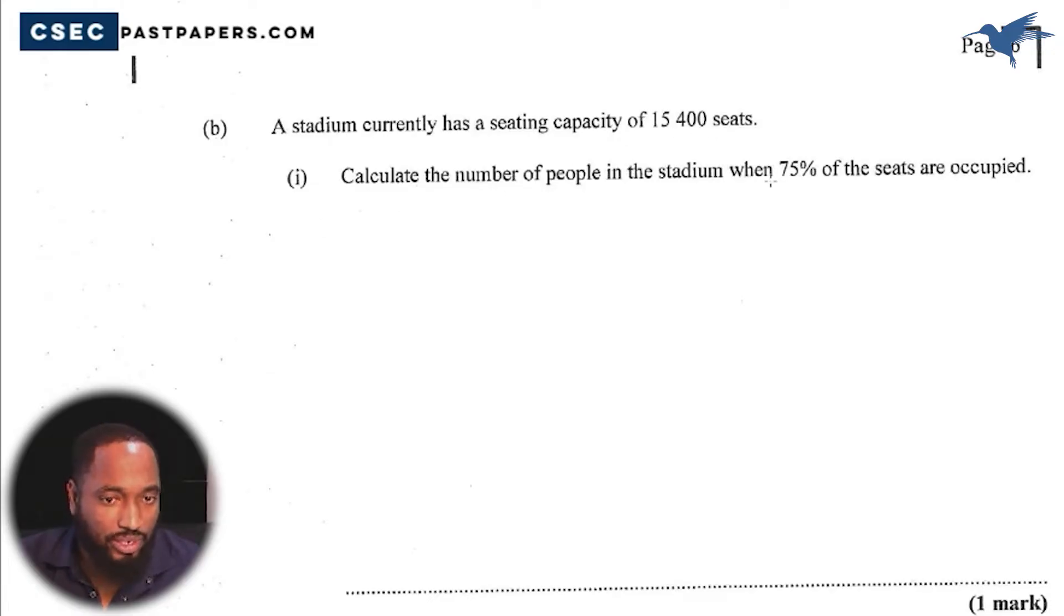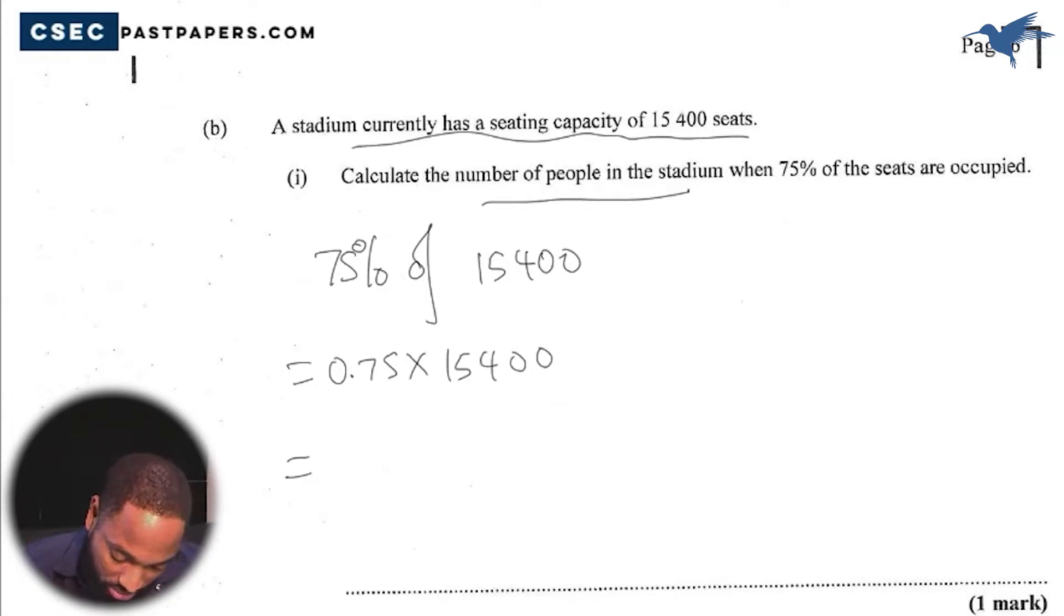A stadium currently has a seating capacity of 15,400 seats. Calculate the number of people in the stadium when 75% of the seats are occupied. So let's go. This is a simple percentage question: 75% of a number. So 75% of 15,400, which is 0.75 multiplied by 15,400.